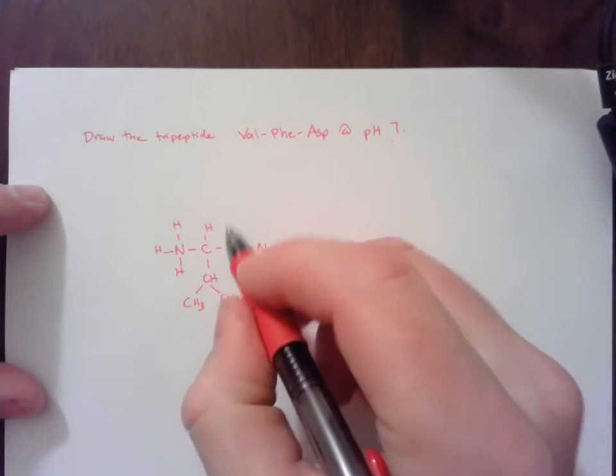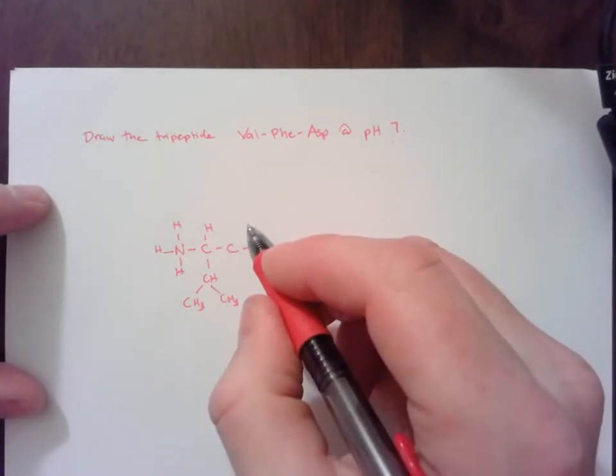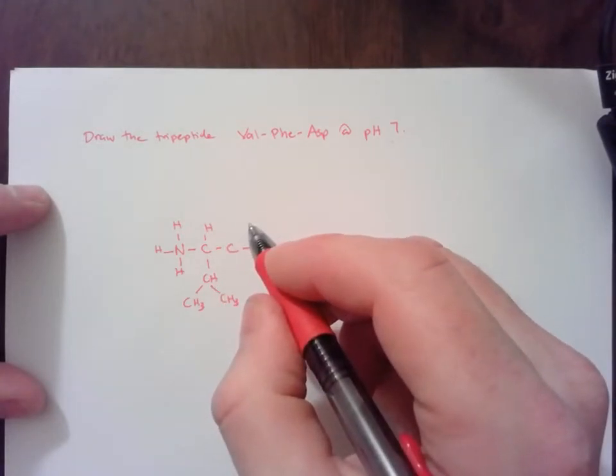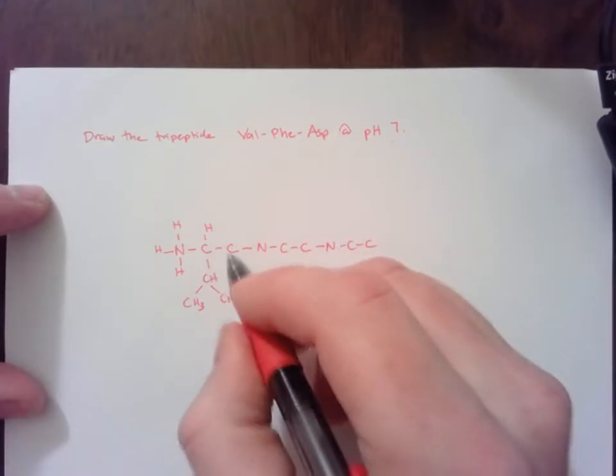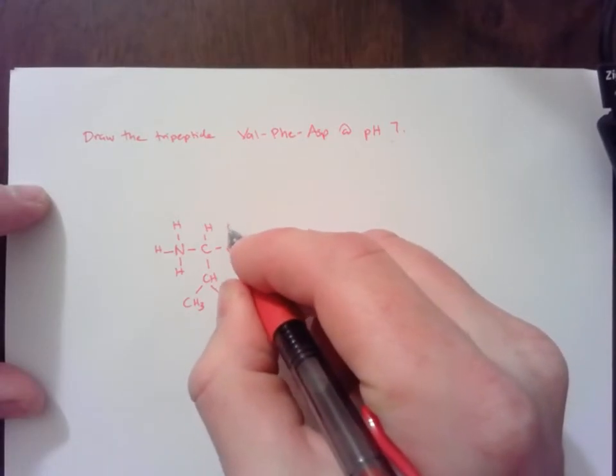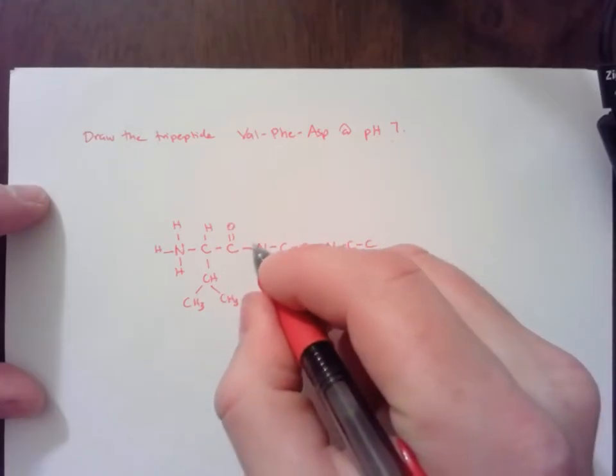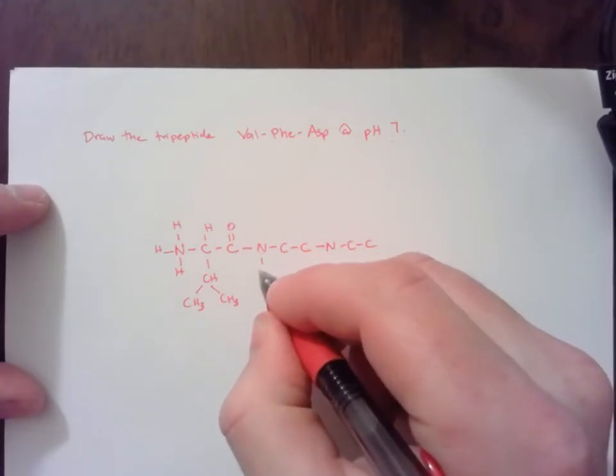And then this carbon is where the carboxylic acid was before it was attached to another amino acid. So this is where the peptide bond starts. C double bond O. And then now we've crossed over into the next amino acid.